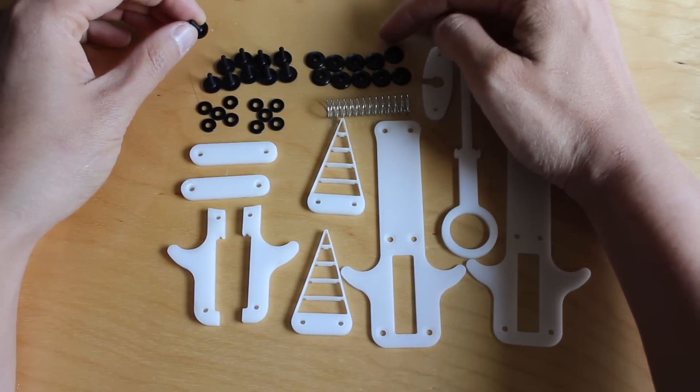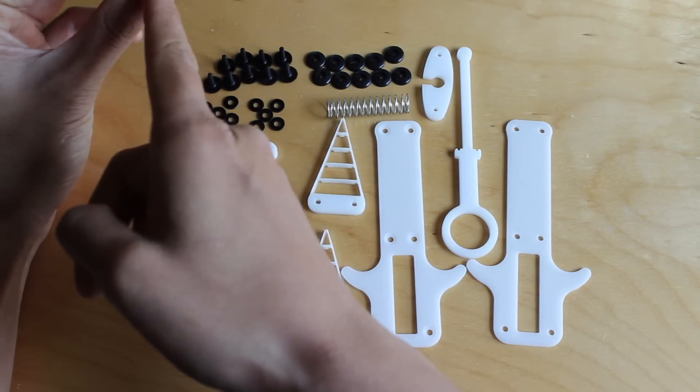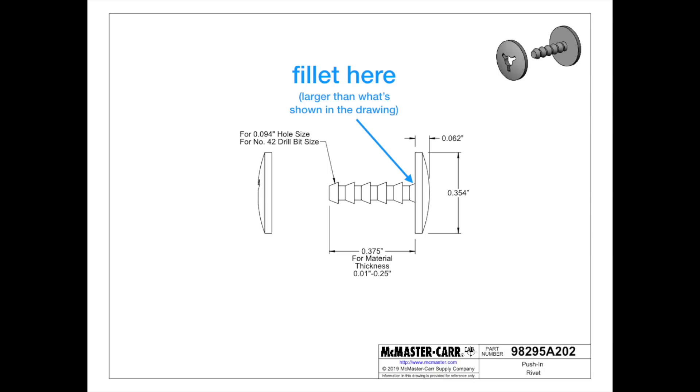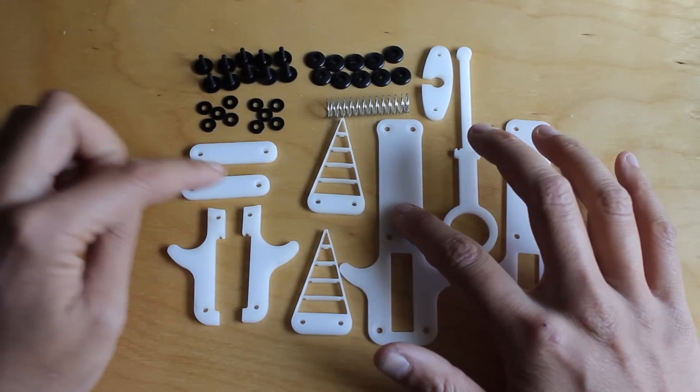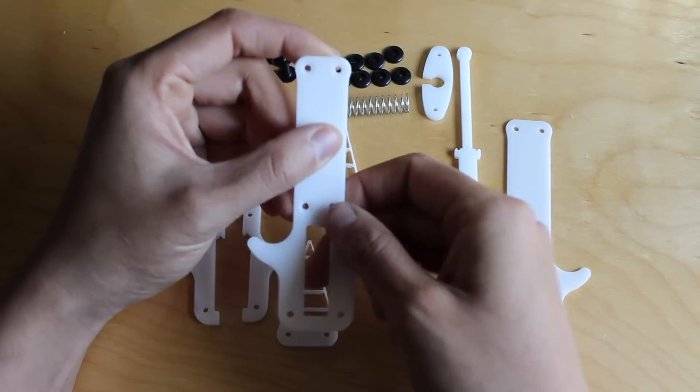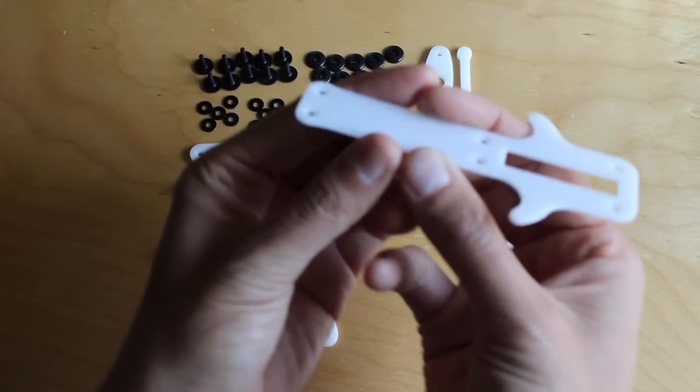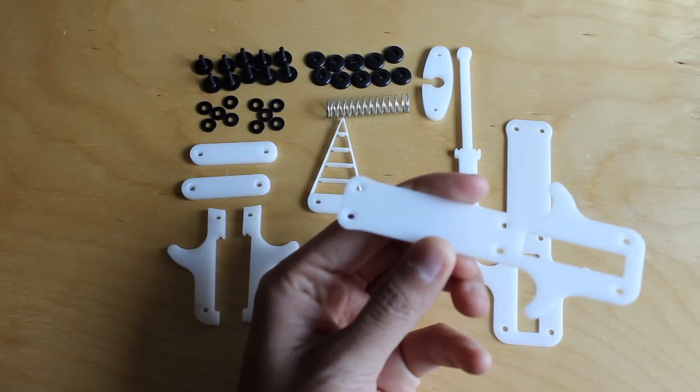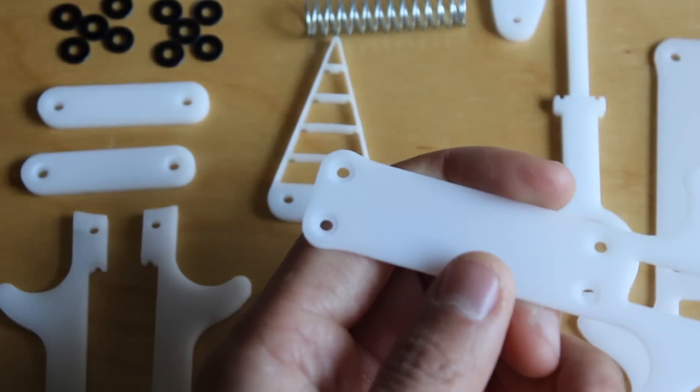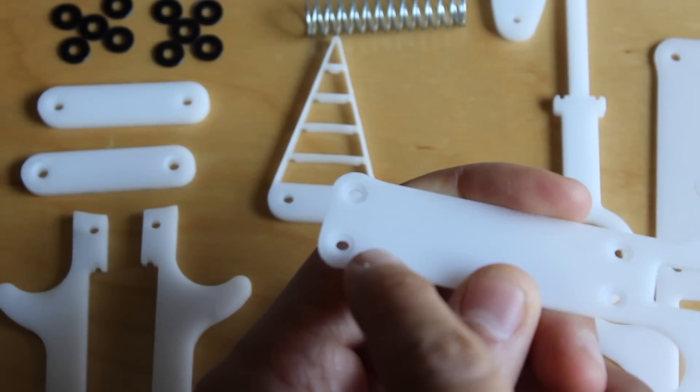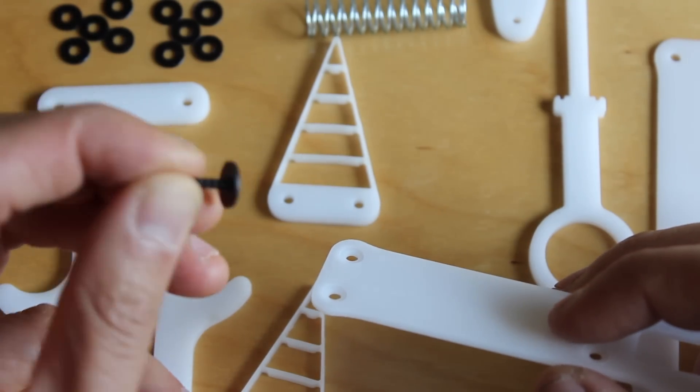This will be a lot easier than screwing. But one thing is that the bottom of the head of this rivet has a bit of a chamfer, so on some of these parts where the head of the rivet will sit, I've laser etched a counterbore that is going to help the rivet sit more flush.